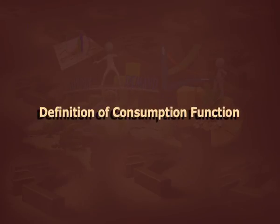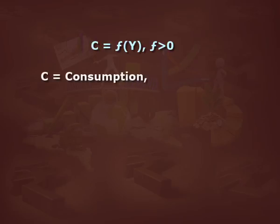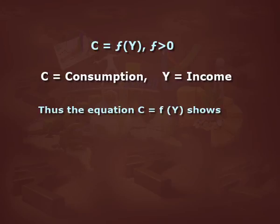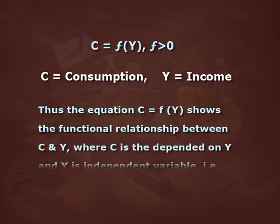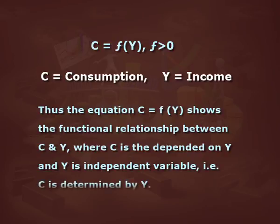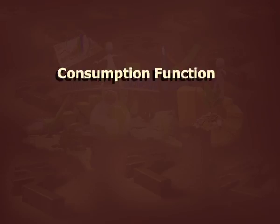Definition of consumption function. Consumption function is defined as the schedule detailing the relationship between aggregate consumption expenditure and gross national income. Therefore, C is equal to function of Y, where F is greater than 0, C represents consumption and Y represents income. The equation C = f(Y) shows the functional relationship between C and Y, where C is dependent on Y, and Y is an independent variable. The consumption function can also be written as C = A + BY.